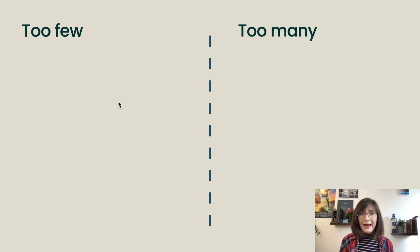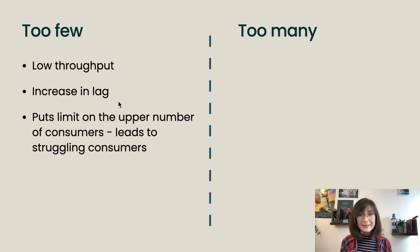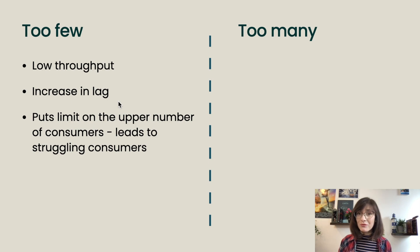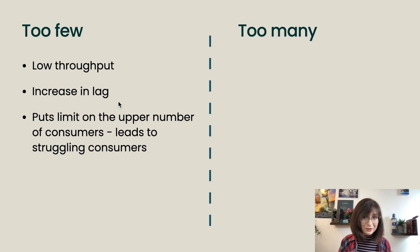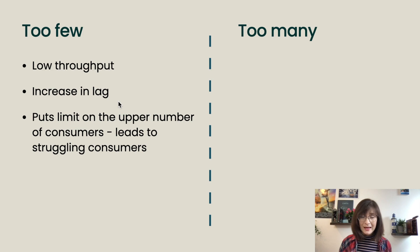Having too few partitions will negatively affect the performance and scalability because it will limit the overall throughput of data. It's like having two traffic lanes instead of five — the movement of the data will be slower. Also, very importantly, the number of consumers in a consumer group is limited by the number of partitions you have in a topic. If you have more consumer instances than the total number of partitions, those instances will be idle.